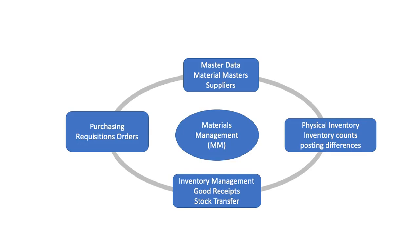Finally, the fourth major component of MM is physical inventory. Physical inventory determines if inventory quantities in the system are correct and flags any discrepancies. Common transactions in physical inventory are entering inventory counts and posting any inventory differences.